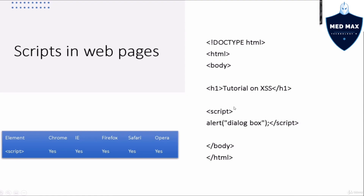The alert function will produce a dialog box pop-up. The reason we use this is because it is a lot more visible to know whether your script has actually gone in successfully. This is one of the ways, especially in the beginning stage when you're trying to do injection, to see whether a text form or URL is actually subject to JavaScript injection.